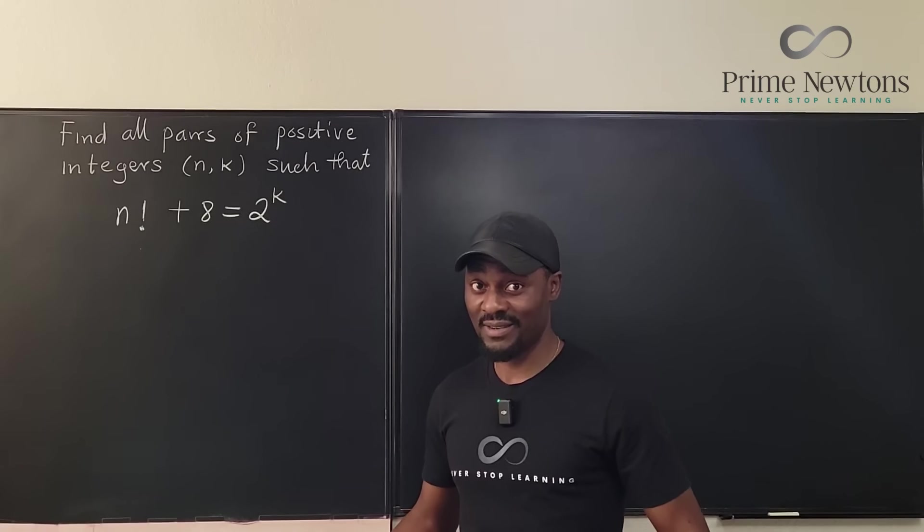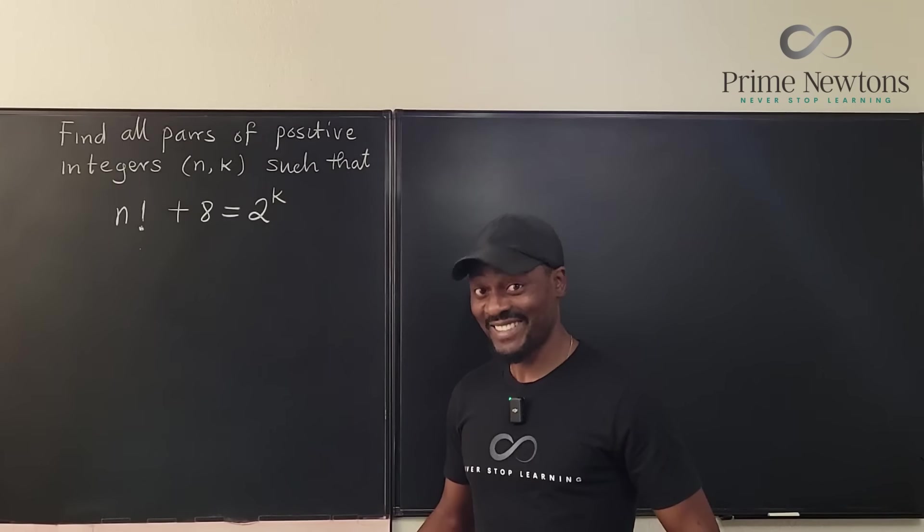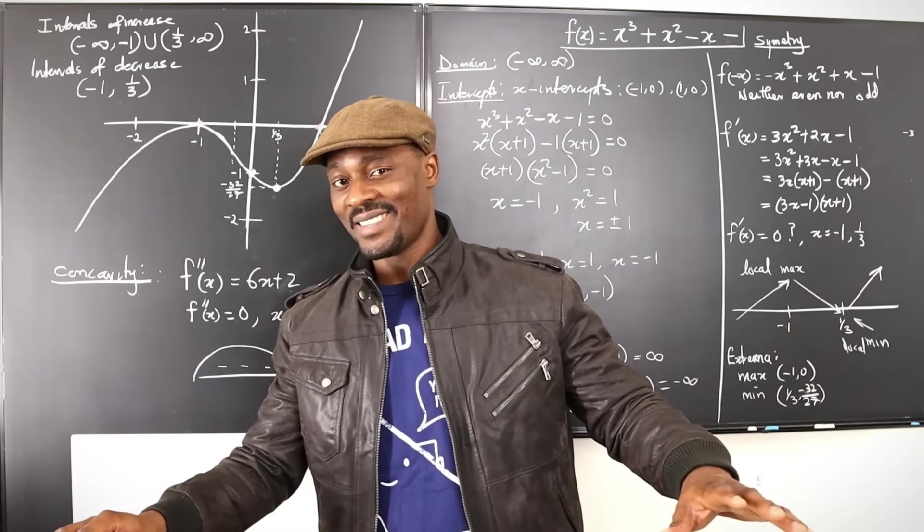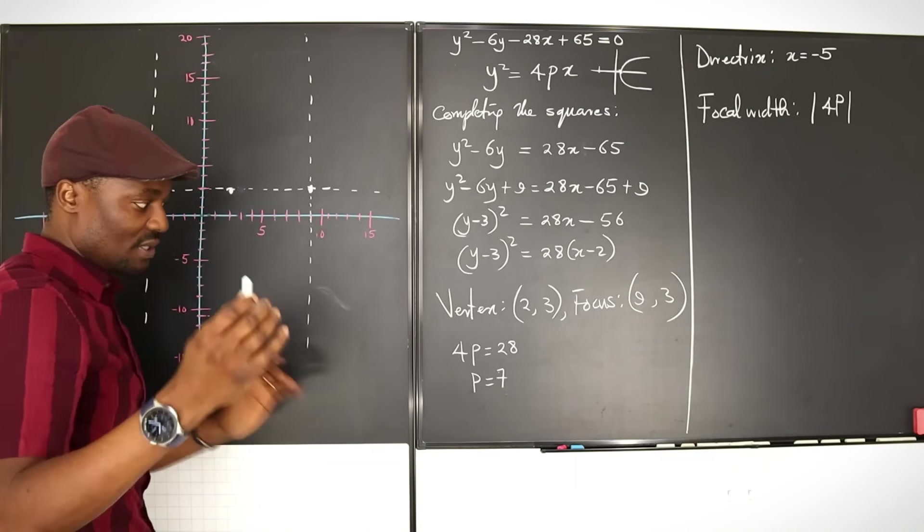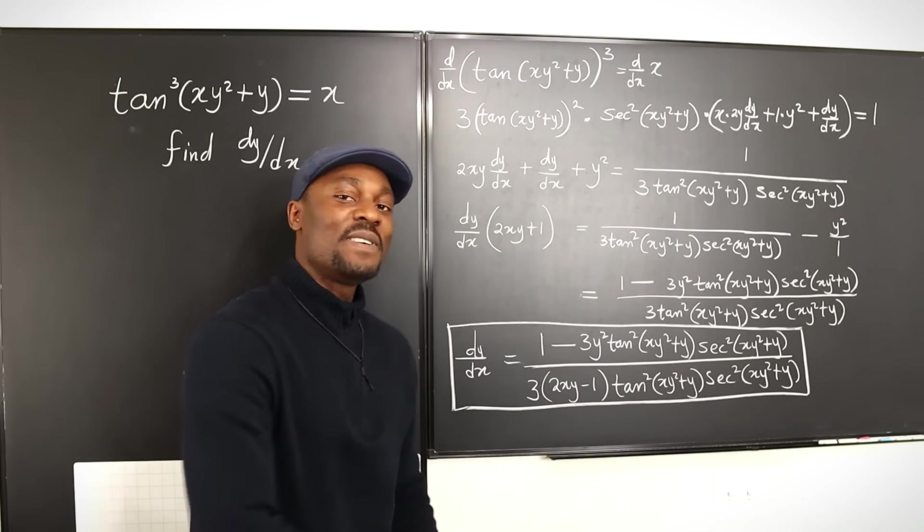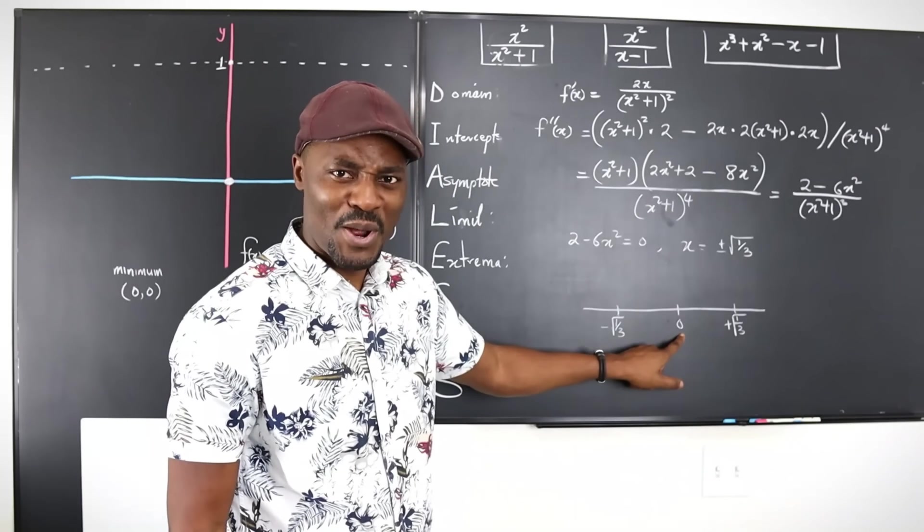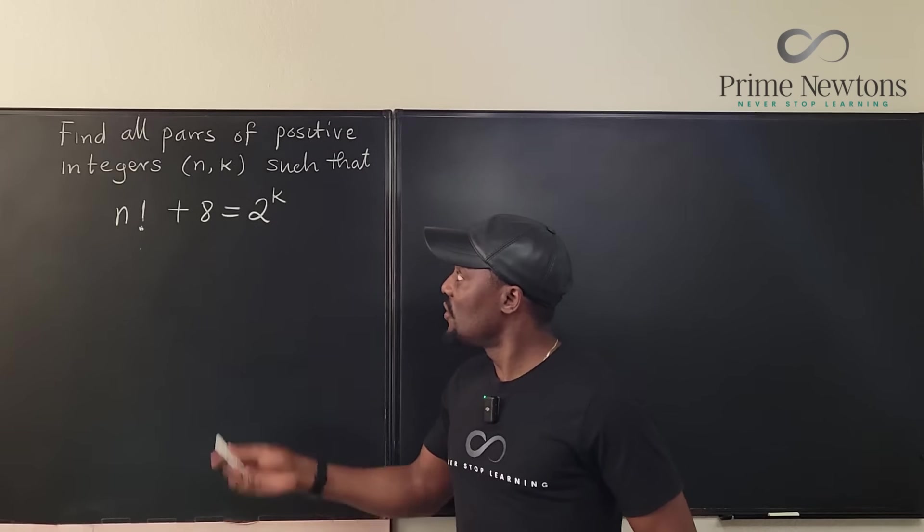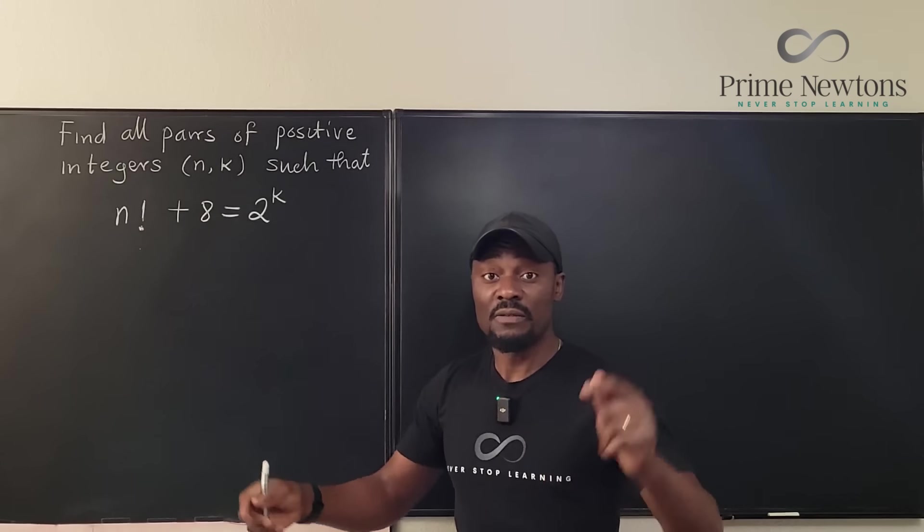Let's get into the video. So the task is to find all pairs of n and k such that n factorial plus 8 is equal to 2 to the k.